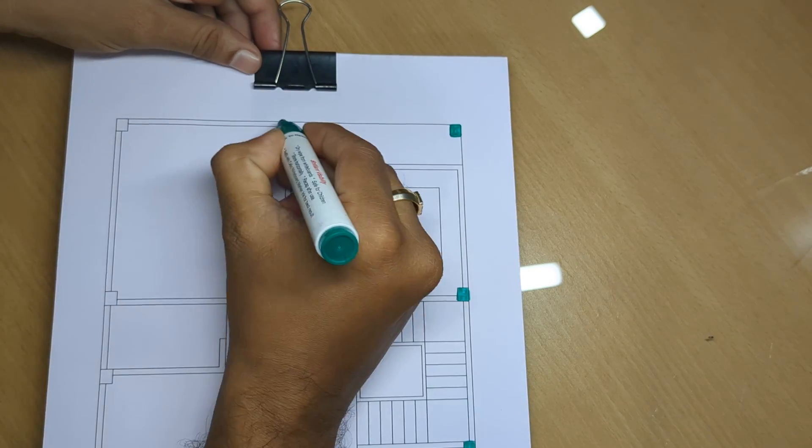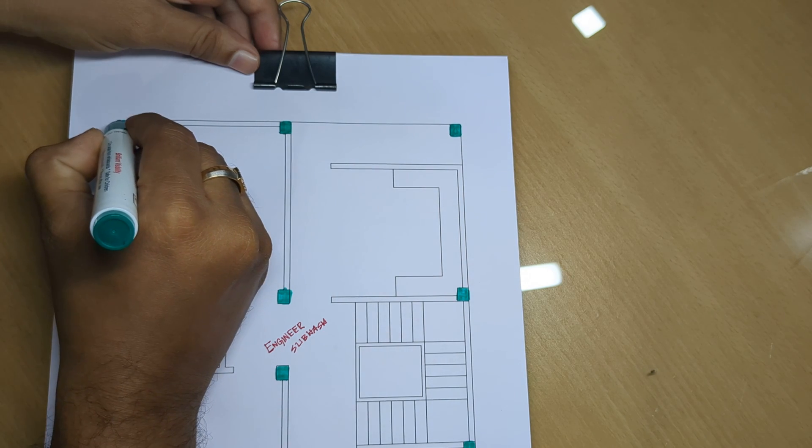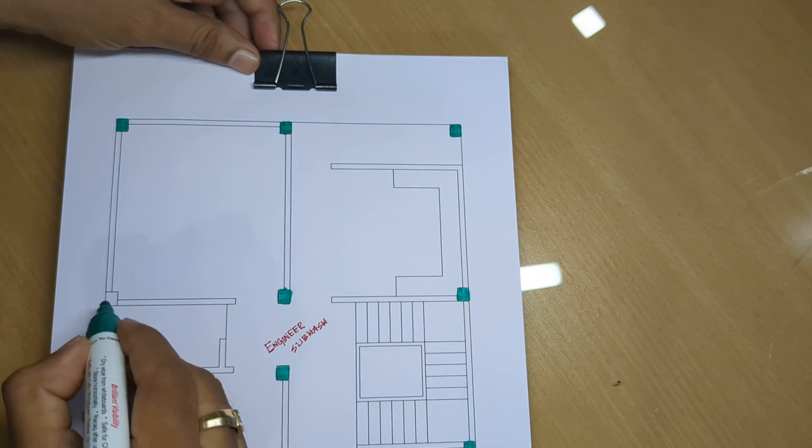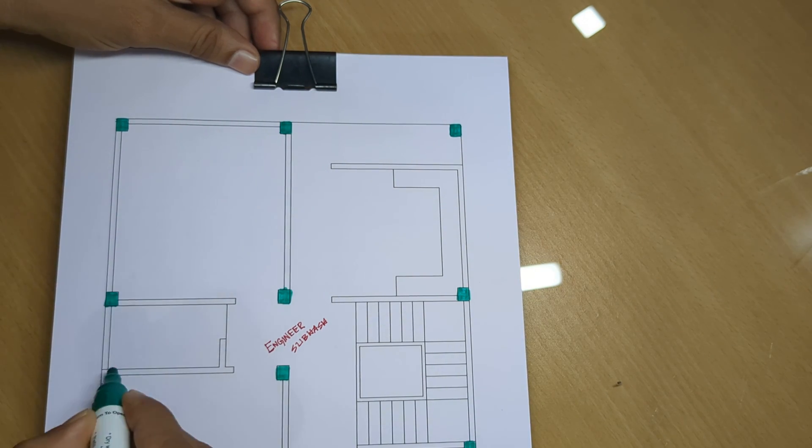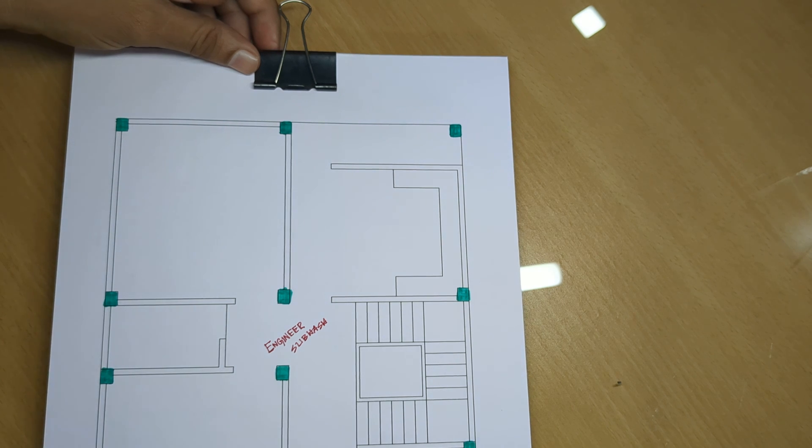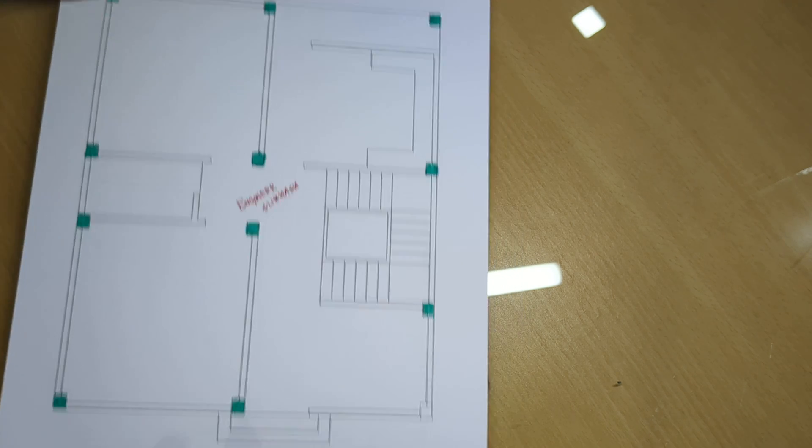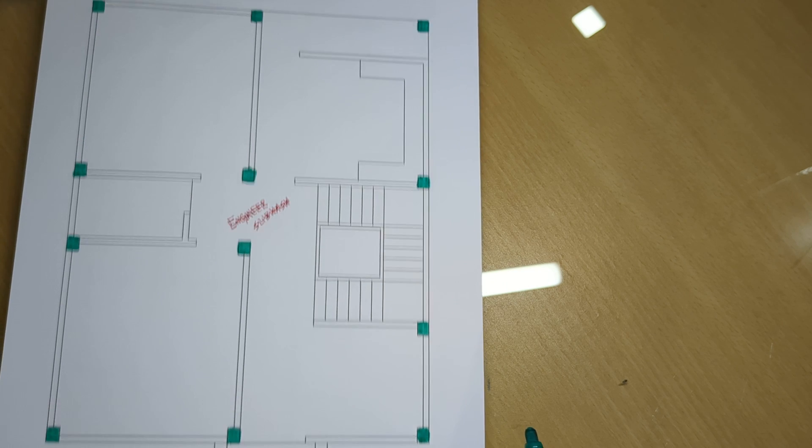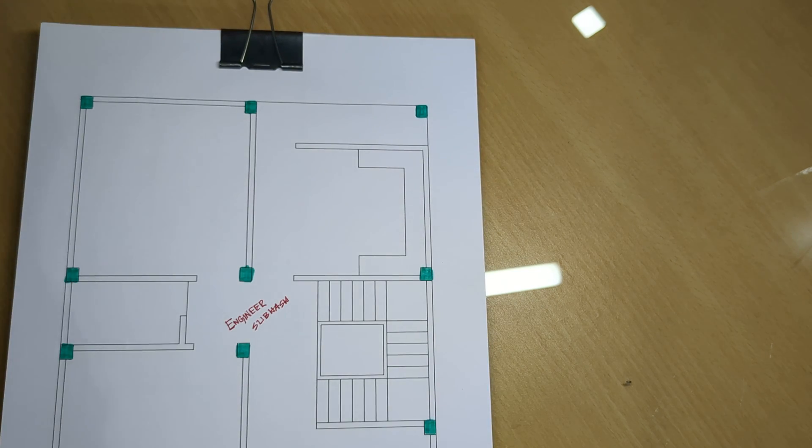There are three rooms in this plan: one kitchen room, dining room, and two bedrooms, and also a drawing room.